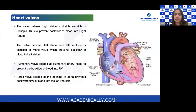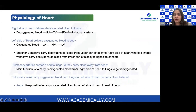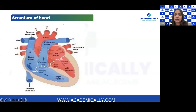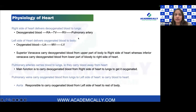On the next slide: the right side of the heart delivers deoxygenated blood to the lungs — it travels right atrium, tricuspid valve, right ventricle, pulmonary valve, pulmonary artery, then to the lungs. The left side delivers oxygenated blood to the body — it travels from the left atrium through the mitral valve to the left ventricle. The superior vena cava carries deoxygenated blood from the upper part of the body and the inferior vena cava from the lower part.